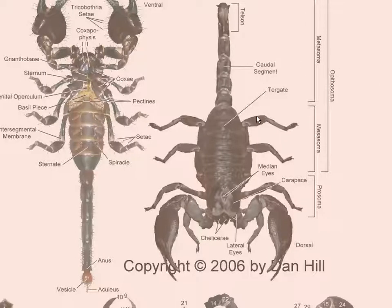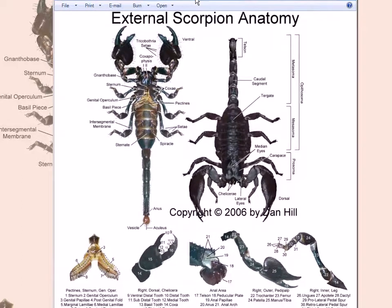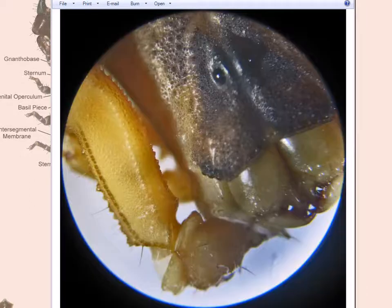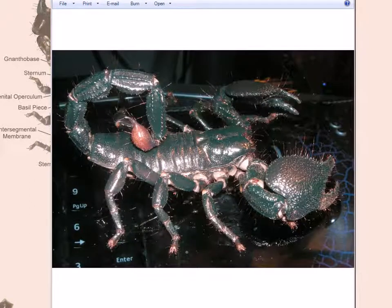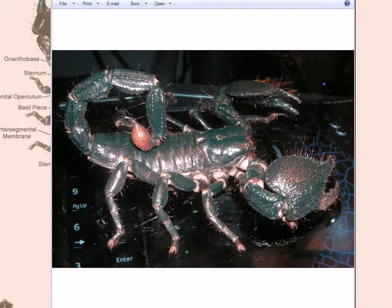Hello everybody. Let's take a quick look at how to model — or how you would approach modeling — an object like a scorpion. It's very important for us to find as much reference as possible. Here I picked a few images from the web that help us understand what's actually happening and how this structure is put together.